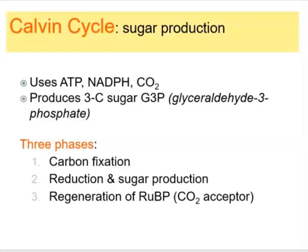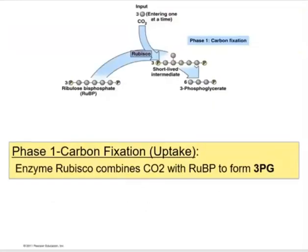In the first phase — carbon fixation — there is a pre-existing compound called ribulose bisphosphate, RuBP, already present in the stroma of the chloroplast. CO₂ enters one at a time, and the enzyme RuBisCO incorporates or fixes that incoming carbon. RuBP has five carbon atoms; adding one CO₂ gives six, forming a short-lived molecule that quickly splits in half into two three-carbon molecules. At this point, CO₂ has gone from a gas to part of a physical, tangible compound.